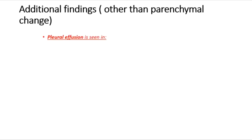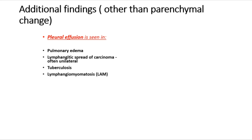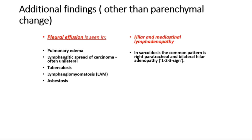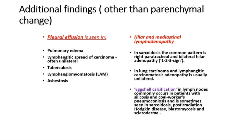Additional findings beyond parenchyma include: pleural effusion (seen in pulmonary edema, lymphangitic spread of carcinoma often unilateral, tuberculosis, LAM, asbestosis); mediastinal lymphadenopathy (sarcoidosis shows the classic right paratracheal and bilateral hilar pattern — the 1-2-3 sign; lung carcinoma and lymphangitic carcinomatosis typically show unilateral adenopathy); and eggshell calcification in lymph nodes (commonly in silicosis and coal workers' pneumoconiosis, and sometimes in sarcoidosis, post-radiation, Hodgkin disease, blastomycosis, and scleroderma).